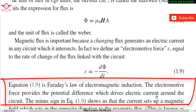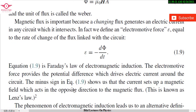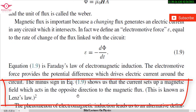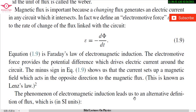The electric current is always in the opposite direction to the magnetic flux. This is also the definition of Lenz's law. The minus sign shows that the electric current set up opposes the change in the magnetic field — this is known as Lenz's law. This equation is Faraday's law of electromagnetic induction, and the minus sign defines Lenz's law.